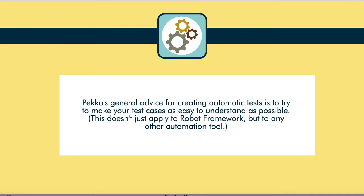I always ask my guests on Test Talks to share one piece of actionable advice. Pekka's actionable advice was that for creating automated tests, you want to make your test cases as easy to understand as possible. This is a great tip — it may seem like common sense, but a lot of people start using programming-type names when you can really help the maintainability of your test scripts by naming things what they represent. So if someone new to the team is starting, you don't need to do a whole bunch of training just by looking at the way you name things — they can pick things up.